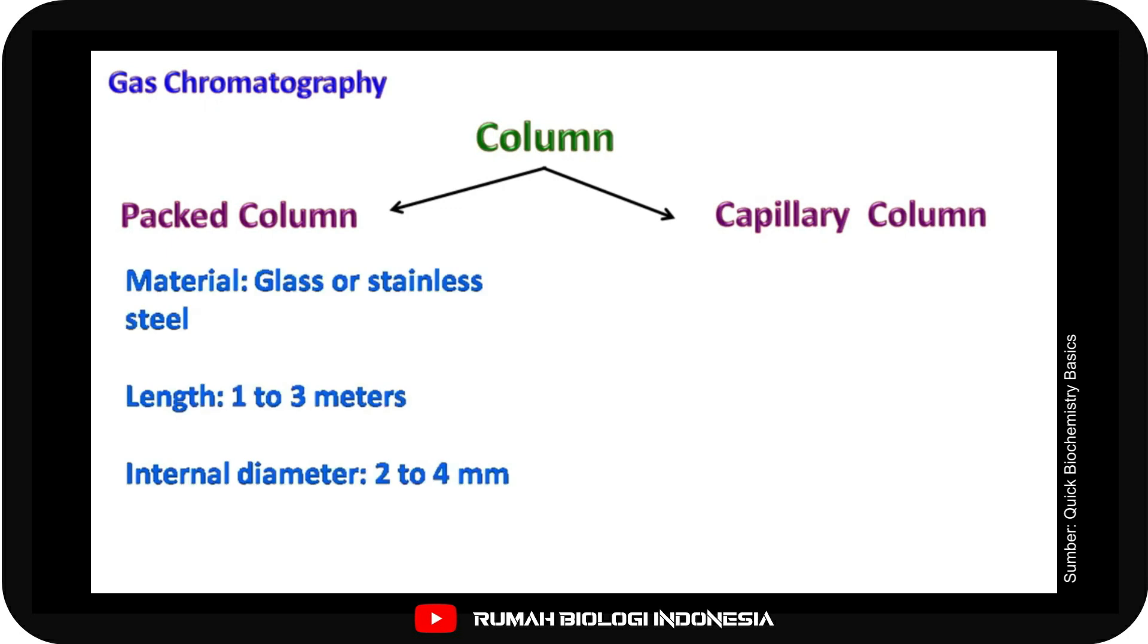Packed column can be made up of glass or stainless steel. The length of this column can vary from 1 to 3 meters and has an internal diameter of 2 to 4 millimeters.